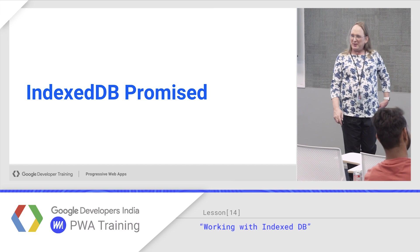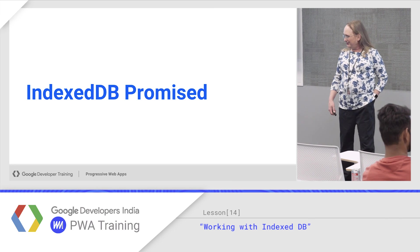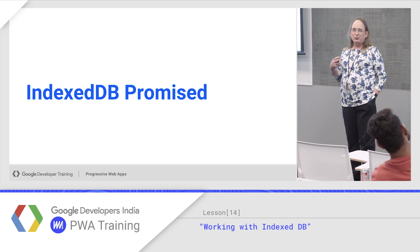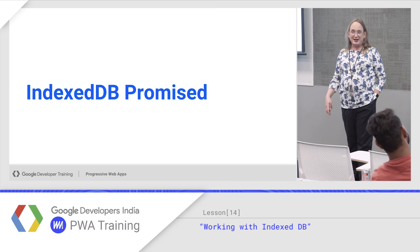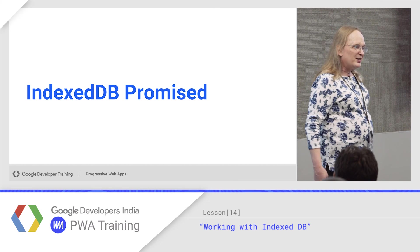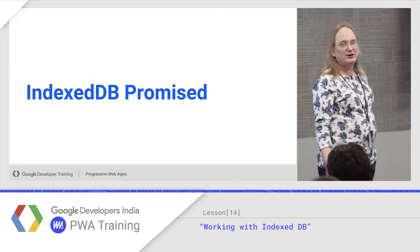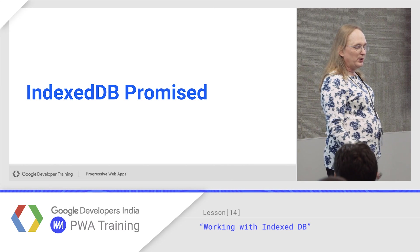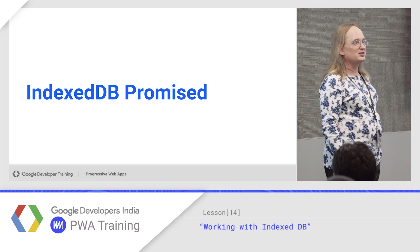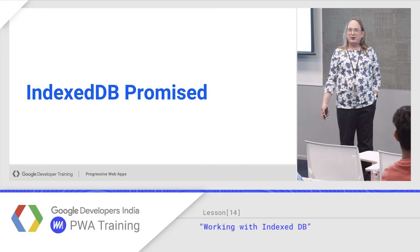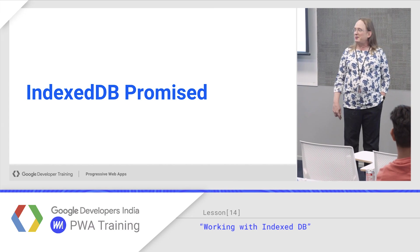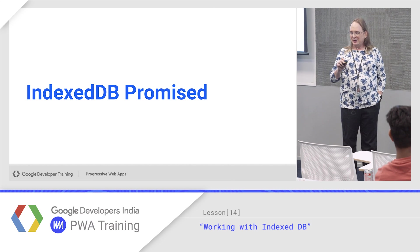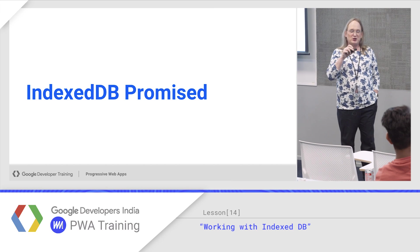IndexedDB by itself is kind of a pain to program. When it was built, we didn't have promises yet, so it was built using events and callbacks because all operations are asynchronous. Writing IndexedDB code with all of those can be really challenging — you write a lot of event handlers and callbacks. So this is the one time where we completely recommend using a library instead, called IndexedDB Promised. Jake Archibald, who worked on the Service Worker spec, wrote this little wrapper library that wraps IndexedDB in promises and makes it drastically simpler to use.